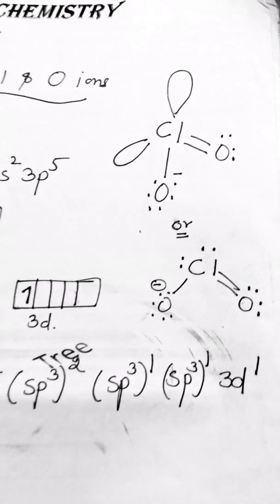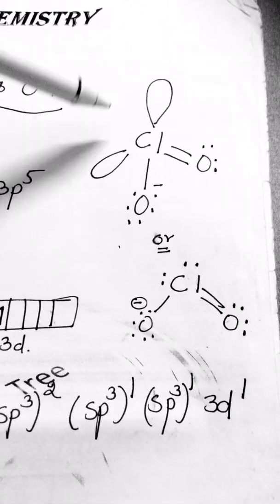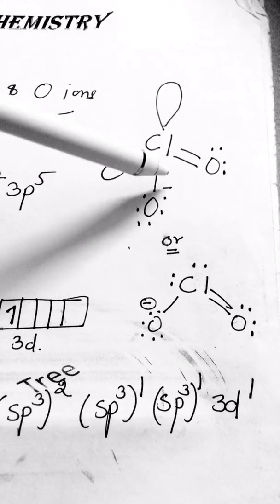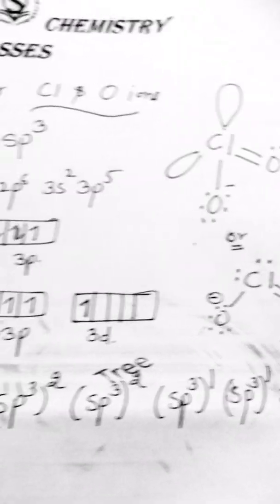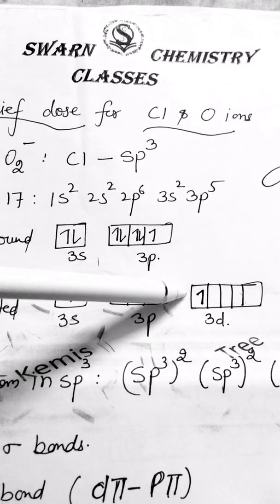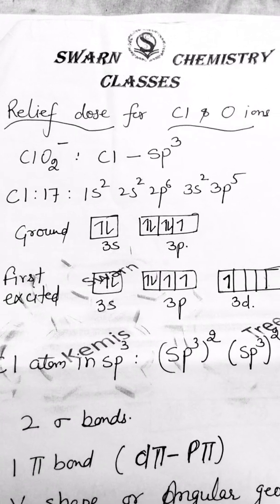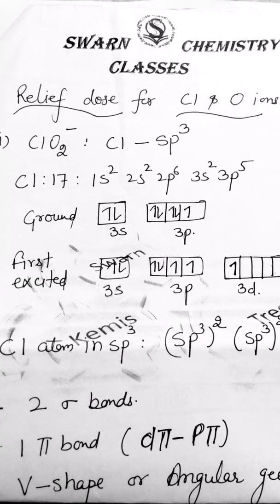This is the shape of ClO2 negative having two lone pairs and one p pi d pi bond that can be shown by this electronic configuration. So that is the overall ClO2 negative molecule.